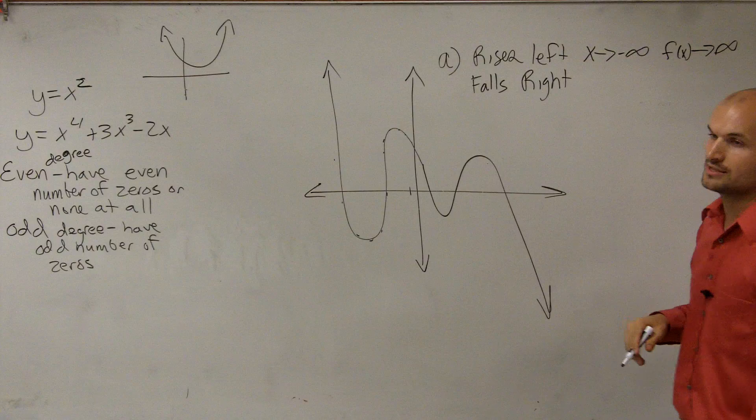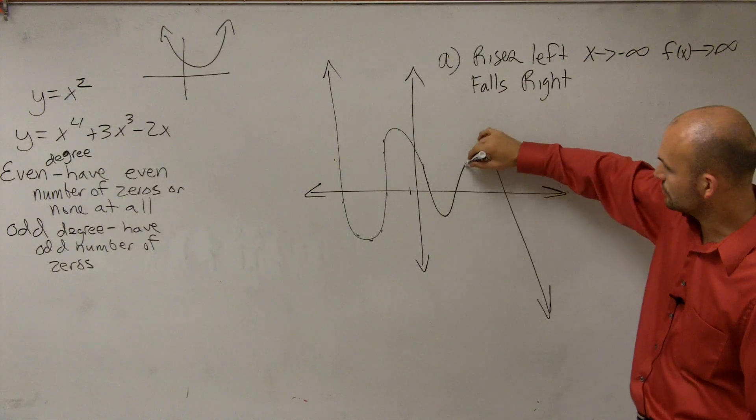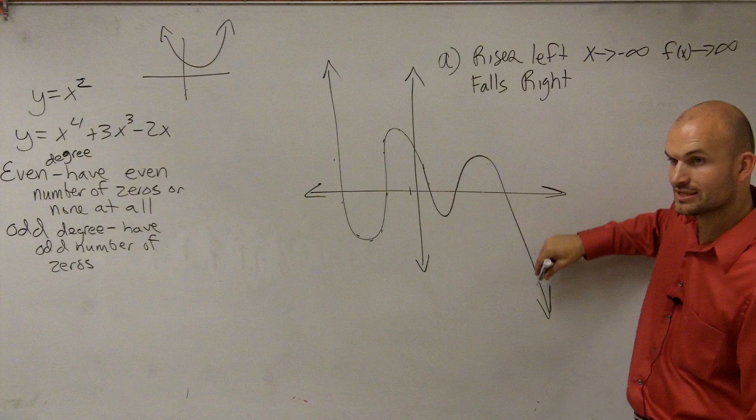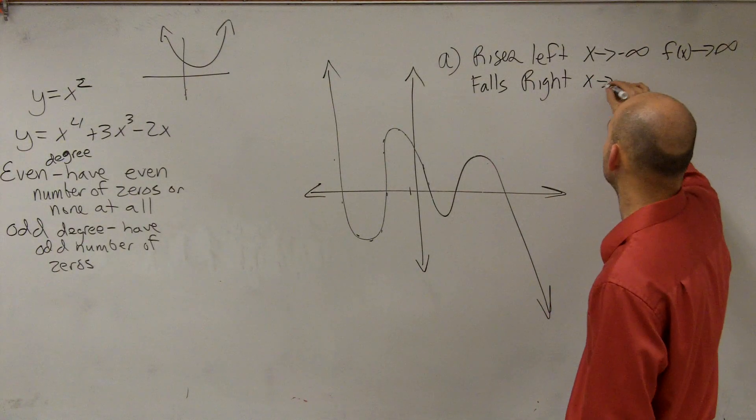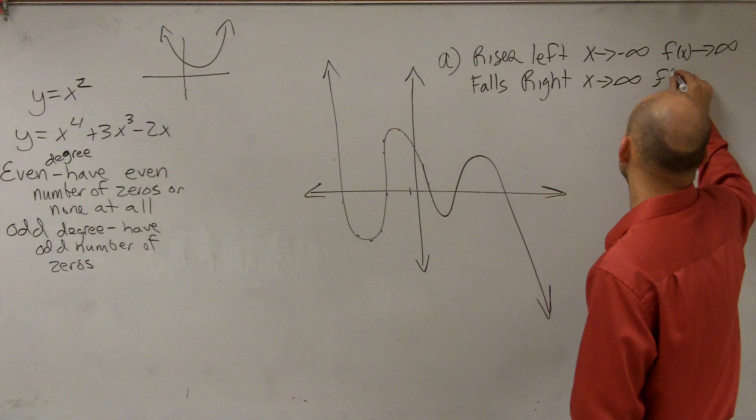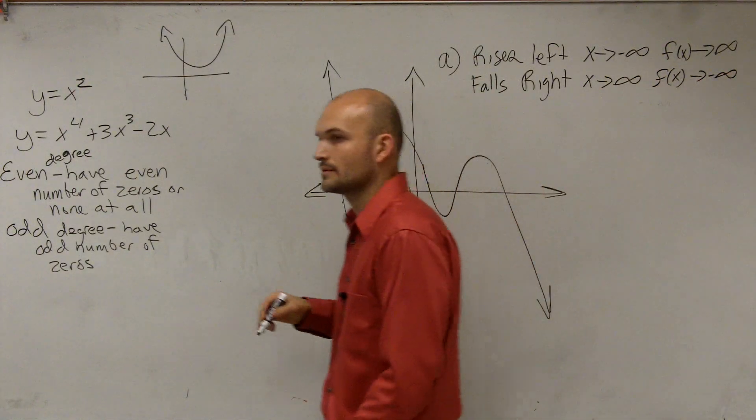Then we can look at to the right. As my x coordinates on my graph go to the right, my y coordinates are now going to go down to negative infinity. So as x approaches positive infinity, my f of x approaches negative infinity. All right?